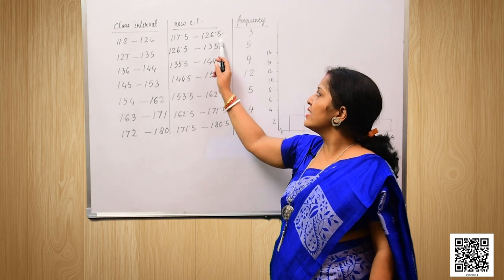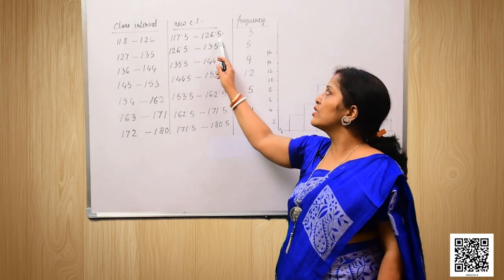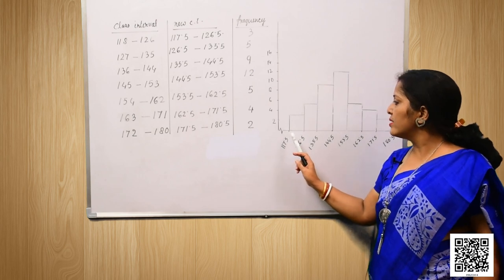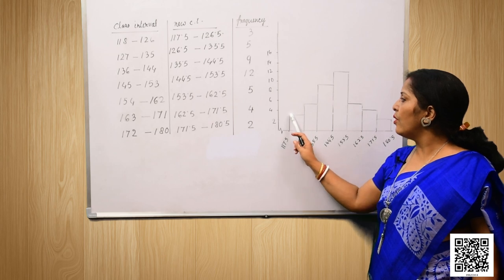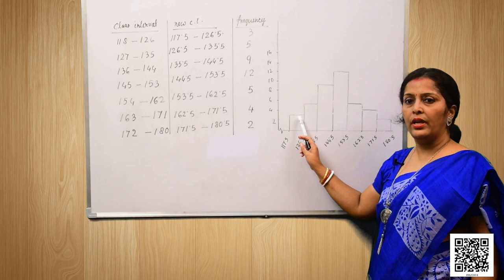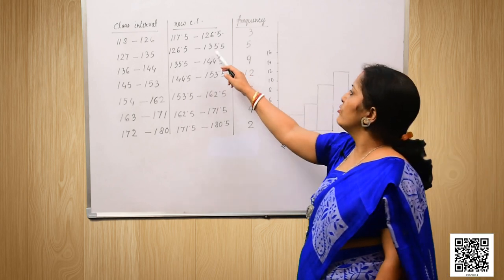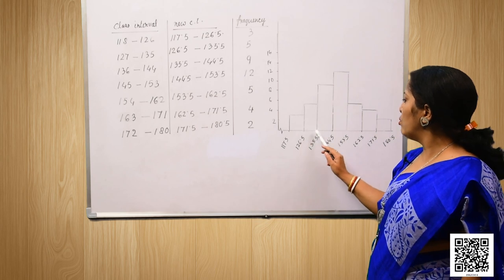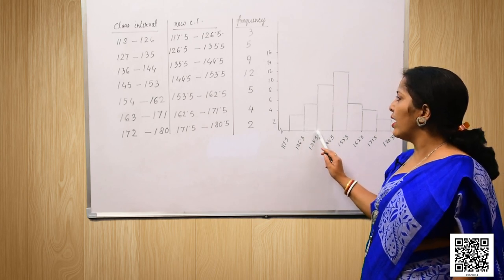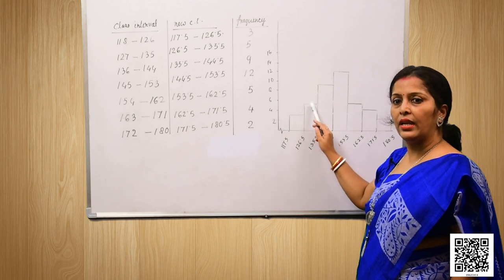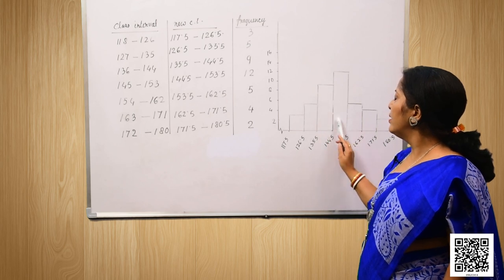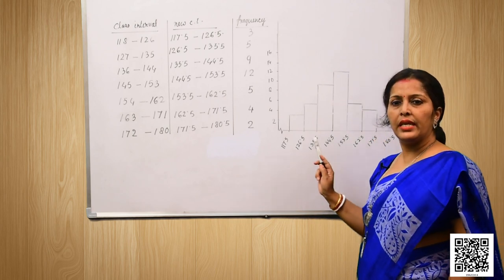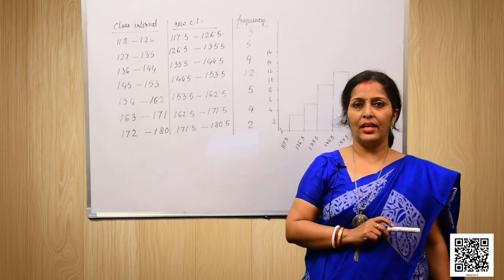The first class interval is 117.5 to 126.5 with frequency 3, so we draw the bar up to 3. The next class 126.5 to 135.5 we draw up to 5. Similarly, the next bars go up to 9, then 12, then 5, then 4, and finally 2. This is our histogram for question number 4.